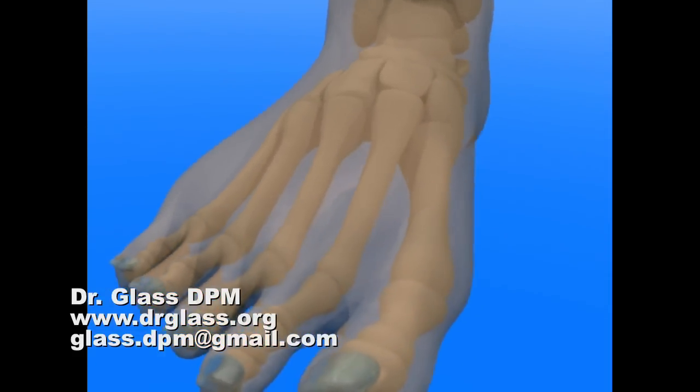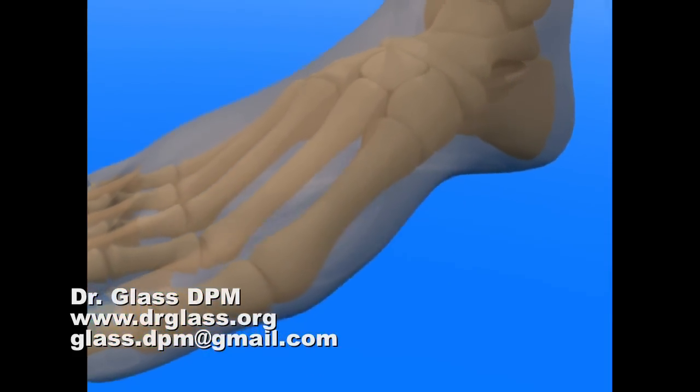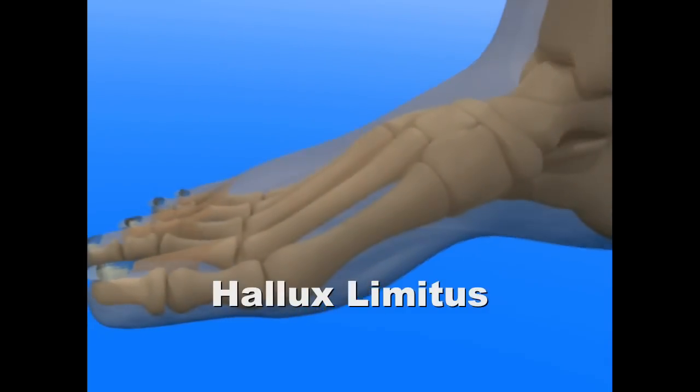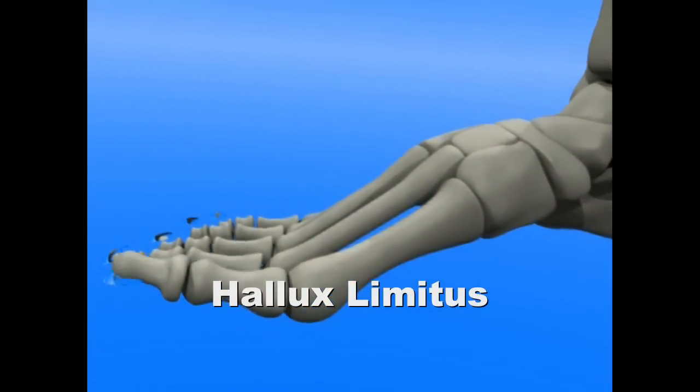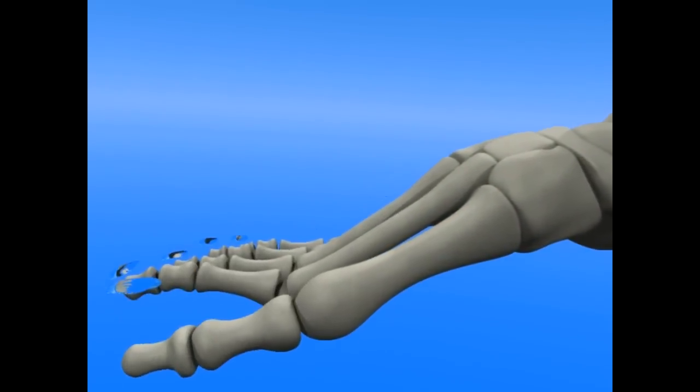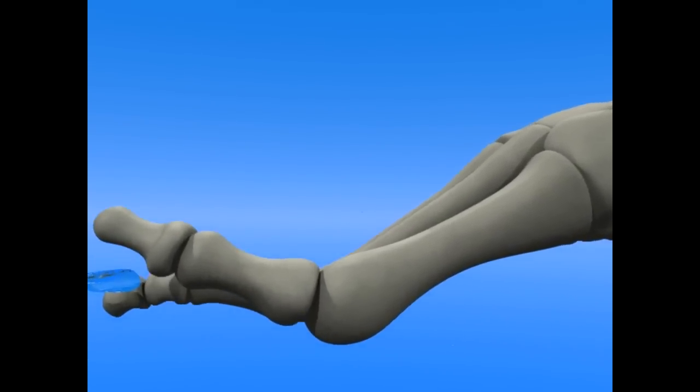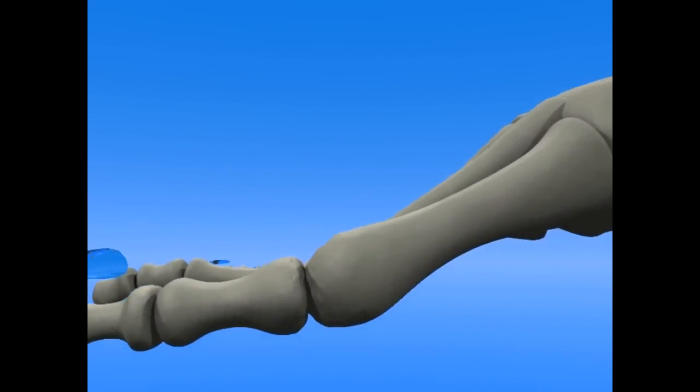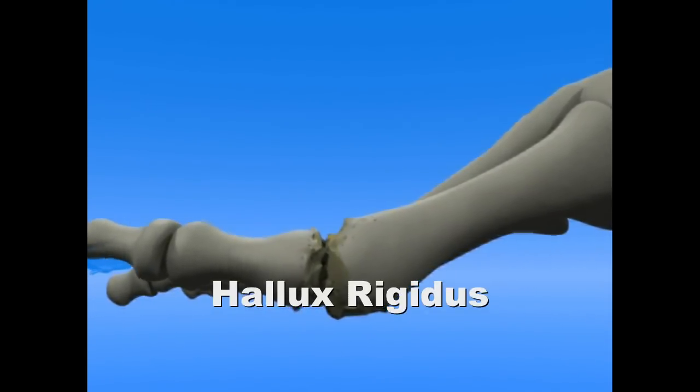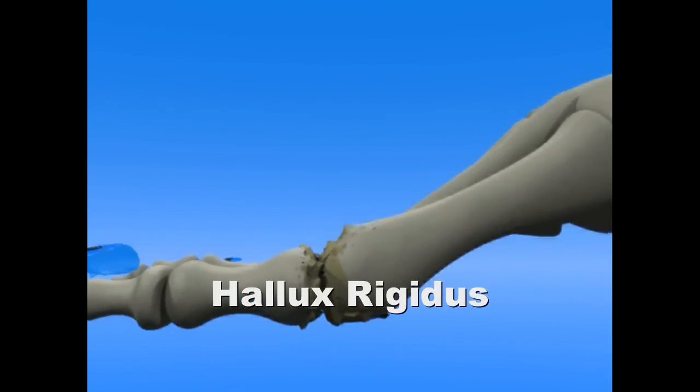Hallux limitus and hallux rigidus describe a pathological condition involving the first metatarsophalangeal joint. Hallux limitus refers to limited range of motion during functional use, such as walking and running, especially on inclines. When structural degeneration advances to the state where there is no motion of the first MPJ at all, it is called hallux rigidus.